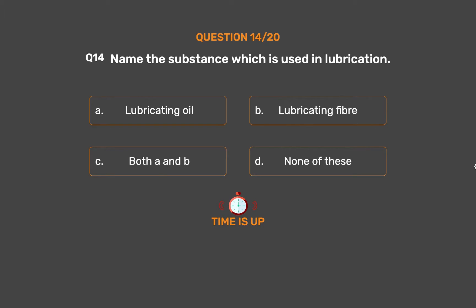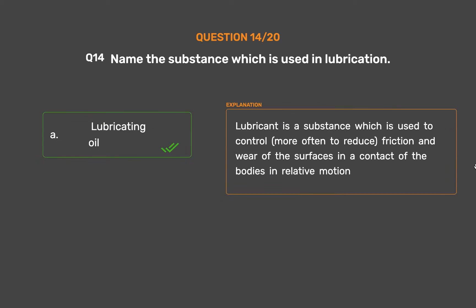The correct answer is Option A: Lubricating oil. A lubricant is a substance which is used to control — more often to reduce — friction and wear of the surfaces in contact of bodies in relative motion.